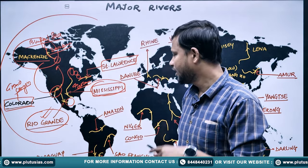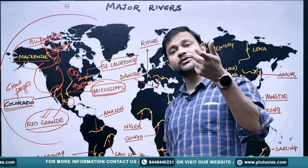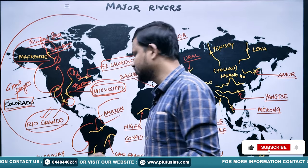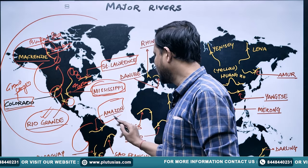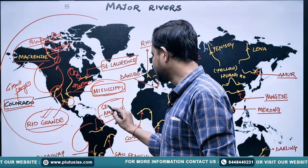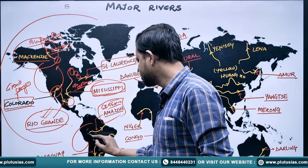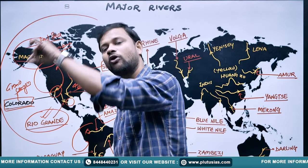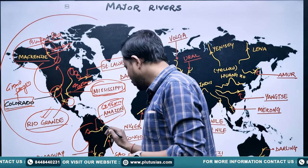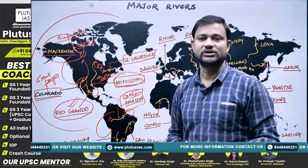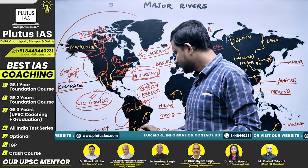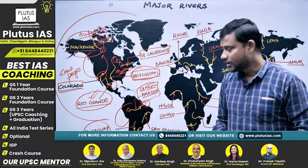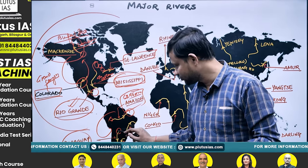Moving to South America, again going anti-clockwise, the world-famous Amazon River has a length of 6,496 kilometers. It originates in the vicinity of the Andes region and covers almost the wider length of South America, draining finally into the South Atlantic. Next is the Paraguay River, originating in central South America and draining into the Atlantic.